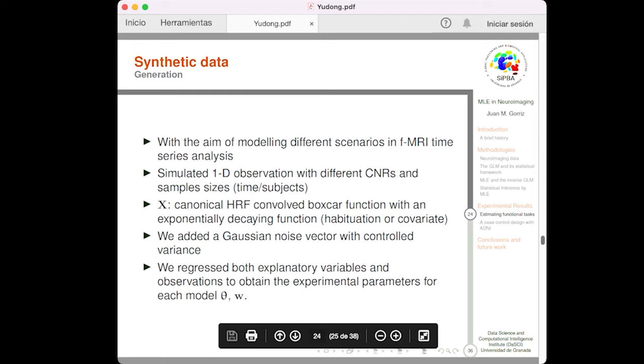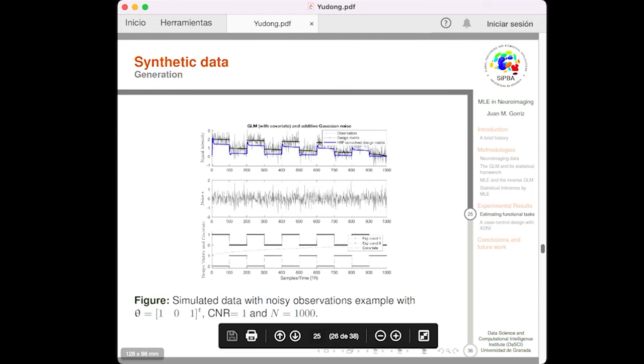So, in the experimental part, and with the aim of modeling different scenarios in fMRI time series analysis, or structural MRI, etc., we simulate one-dimensional observation vector with different CNRs and sample sizes. Sample sizes refers to time points, subjects, etc. X, the design matrix, is going to be selected as the canonical hemodynamic response function, convolved with an exponential decay function that models habituation process in fMRI task analysis or a covariate. We added the Gaussian noise vector with controlled variance, so we are under the Gaussian assumption, and we regress both explanatory variables and observations to obtain the experimental parameters for each domain, theta and omega.